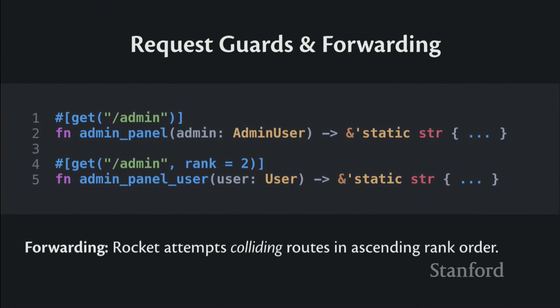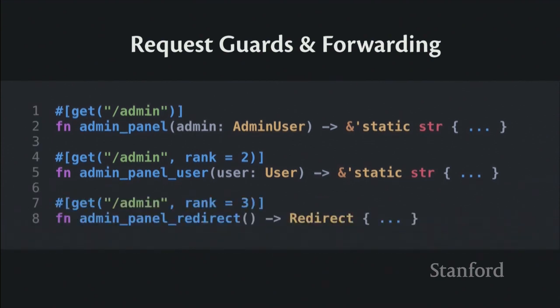You can extend this further with a third route at rank 3 that has no input type requirements — so it always runs. In a real application, this pattern implements authorization and authentication: if there's an admin user, give them the admin panel; if there's a regular user, tell them they need to be an administrator; if no one is logged in, redirect to the login page. Rocket does everything for you — you just write the happy case for each scenario.